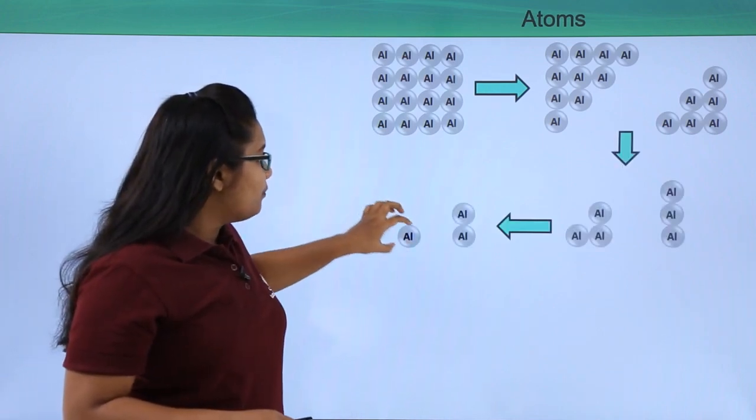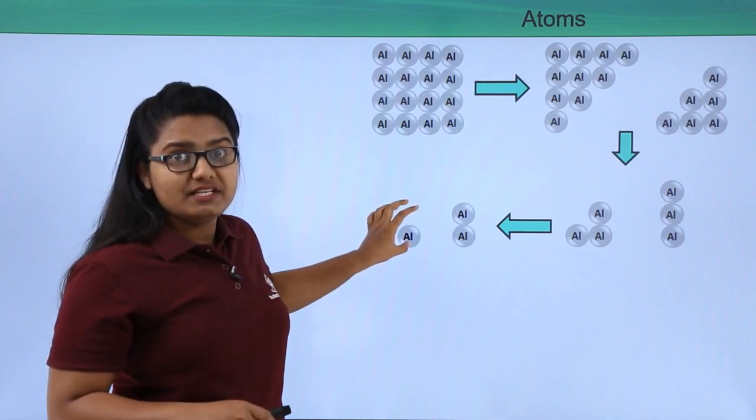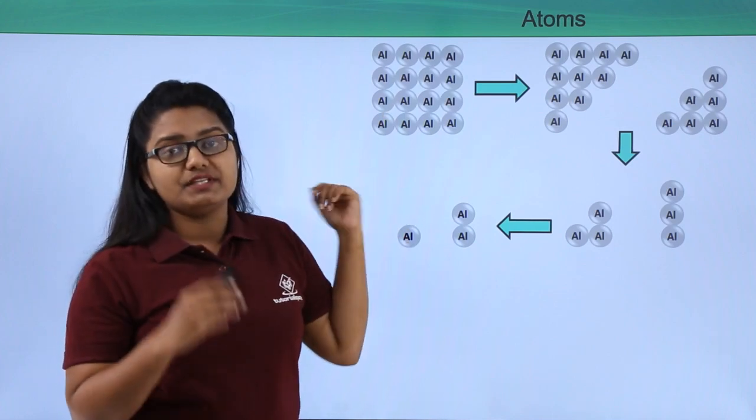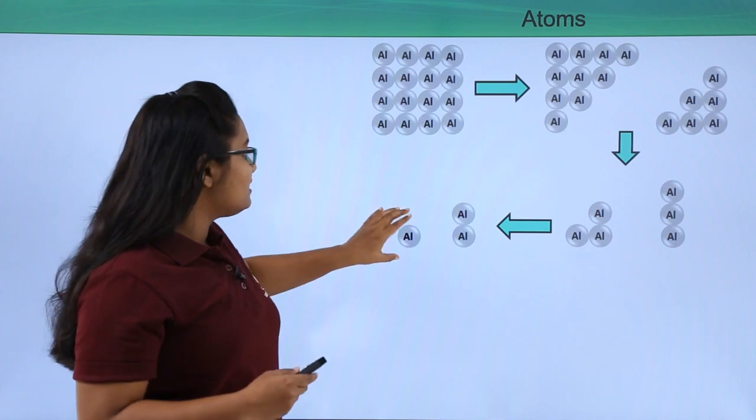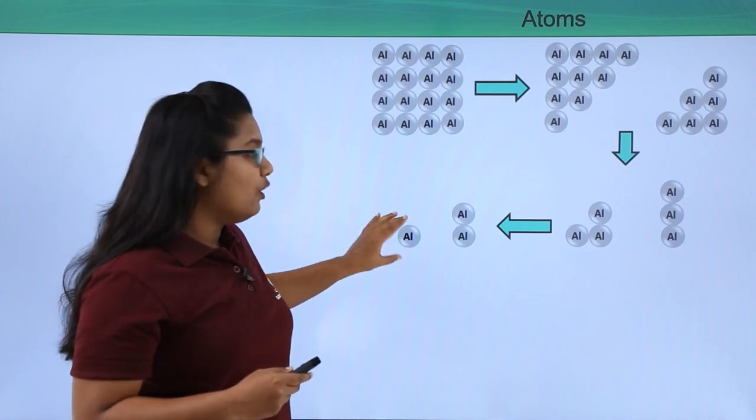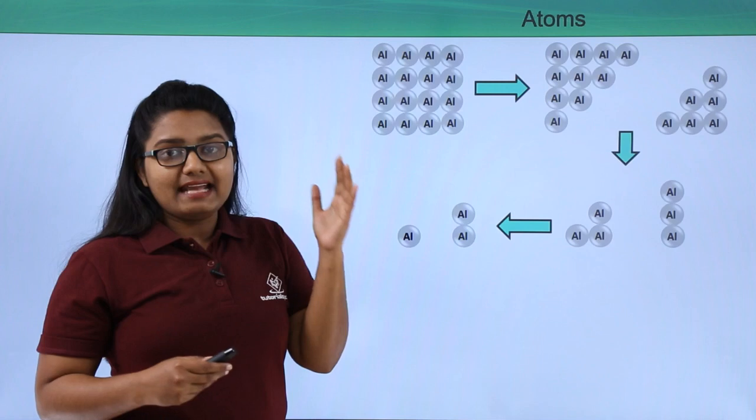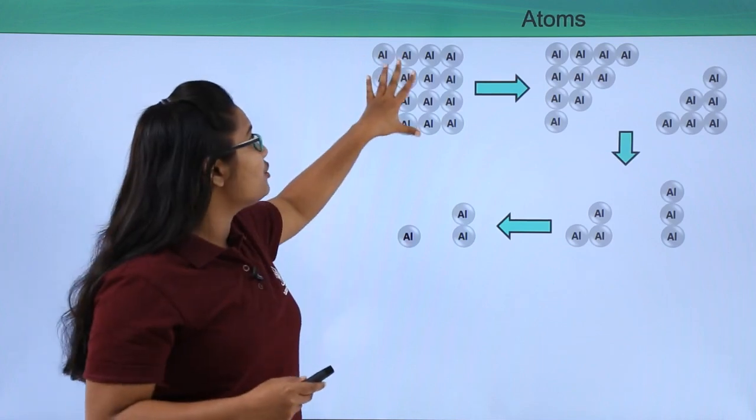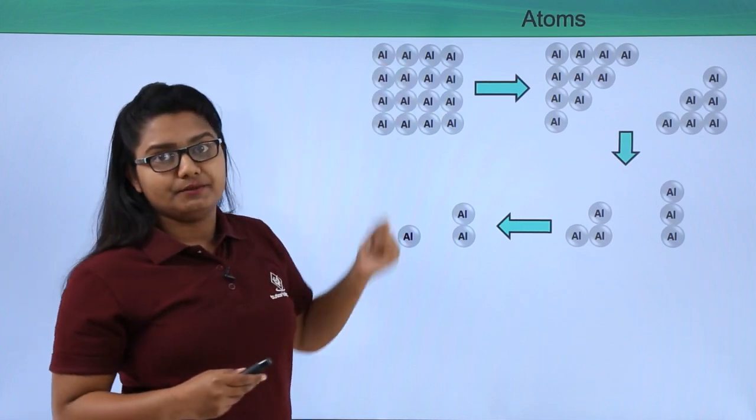When we repeat this process again and again, we arrive at the smallest particle of which this aluminum foil piece was made up of. This smallest particle has all the chemical and physical properties exactly the same as the whole bunch of aluminum atoms.